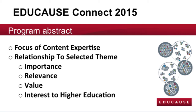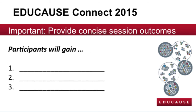Think in terms of its importance, relevance, value, and interest to the higher education IT community. Please be concise and avoid overly descriptive prose — there's a 100-word limit. Provide the concise outcomes for your session. Give it some thought: what will participants gain by attending? Will they design something? Will they recognize key subtle differences in options? Will they craft strategic solutions? What will they walk away with? There's a 30-word limit, so estimate 9 words per line.